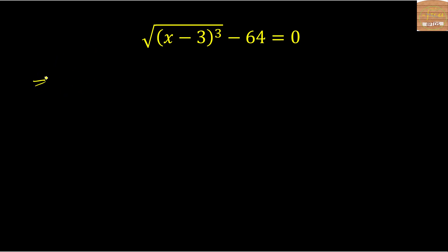This: (x-3)³ equals 64. Right, so let's remove the square root by squaring both sides. Okay, so 64 squared will be 4096, and this will remove the square root sign.